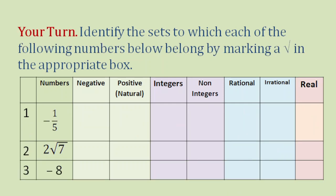Now I prepared here 3 numbers for you to work on. Number 1: negative 1 fifth. Number 2: square root of 7. And number 3: negative 8. You can pause the video and try working on these 3 numbers. Identify the sets to which each of the following numbers belong by marking a check in the appropriate box. If you are done, I can now show you the answer.